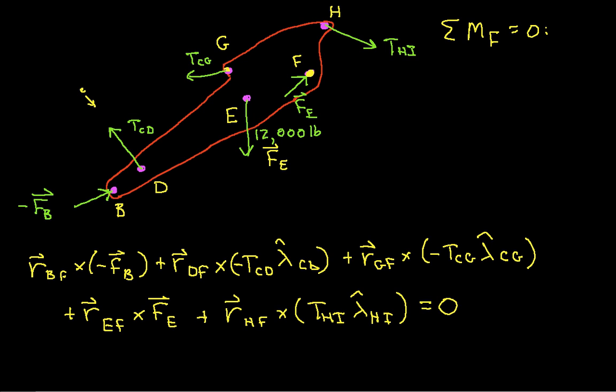The only thing that is unknown is T H I. So I can do all the computations. I'll get numbers times K hat. I set everything equal to zero. And I solve for T H I to discover that T H I is equal to 111,405 pounds. Okay. So by using the moment equation, I've got this.